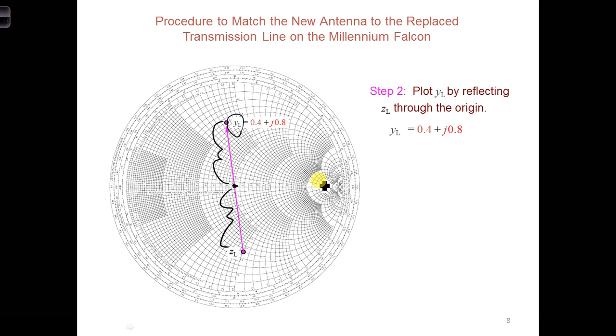Now we want to use the Smith chart to match the antenna load to the transmission line by adding a circuit element or stub in parallel to the transmission line. The goal is to have the transmission line with the circuit element or the stub in parallel match the characteristic admittance of the transmission line. So in other words, what we're after now is that y_in is equal to y_0.